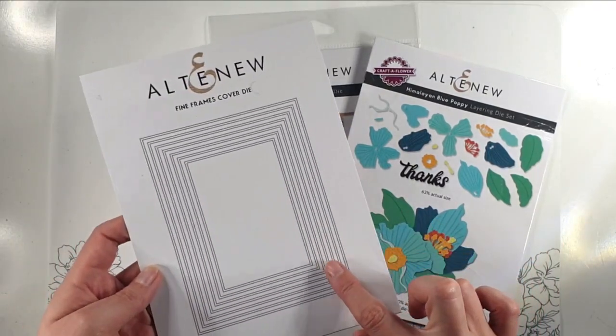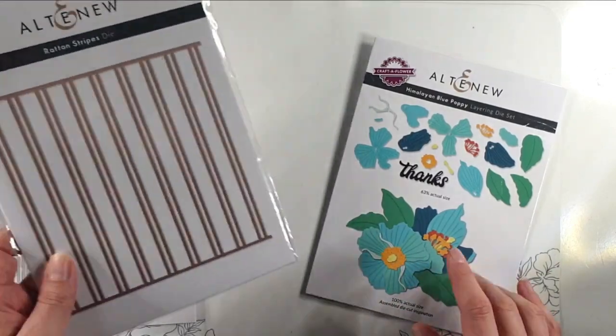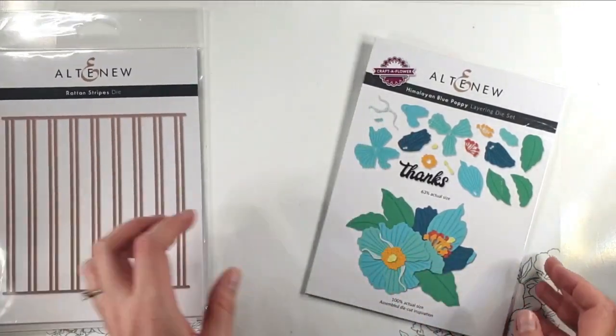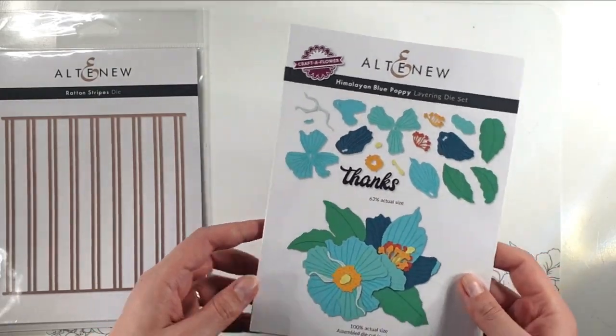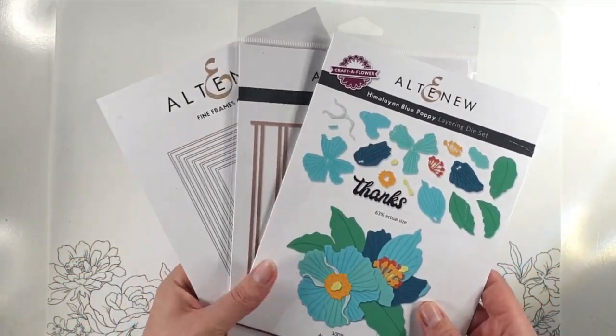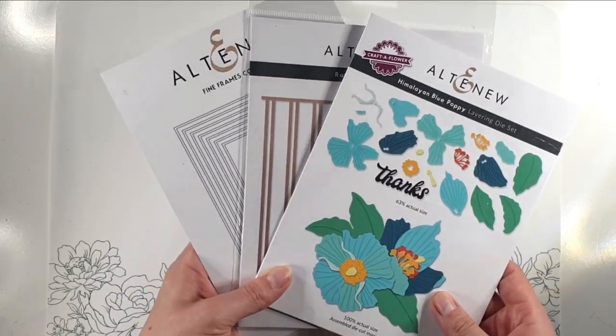I'm going to use this fine frames cover die from Altenew, the rattan stripes die, and then to decorate it I'm going to use this Himalayan blue poppy layering dice. We're going to use a whole heap of die cuts today and create a nice interesting effect.